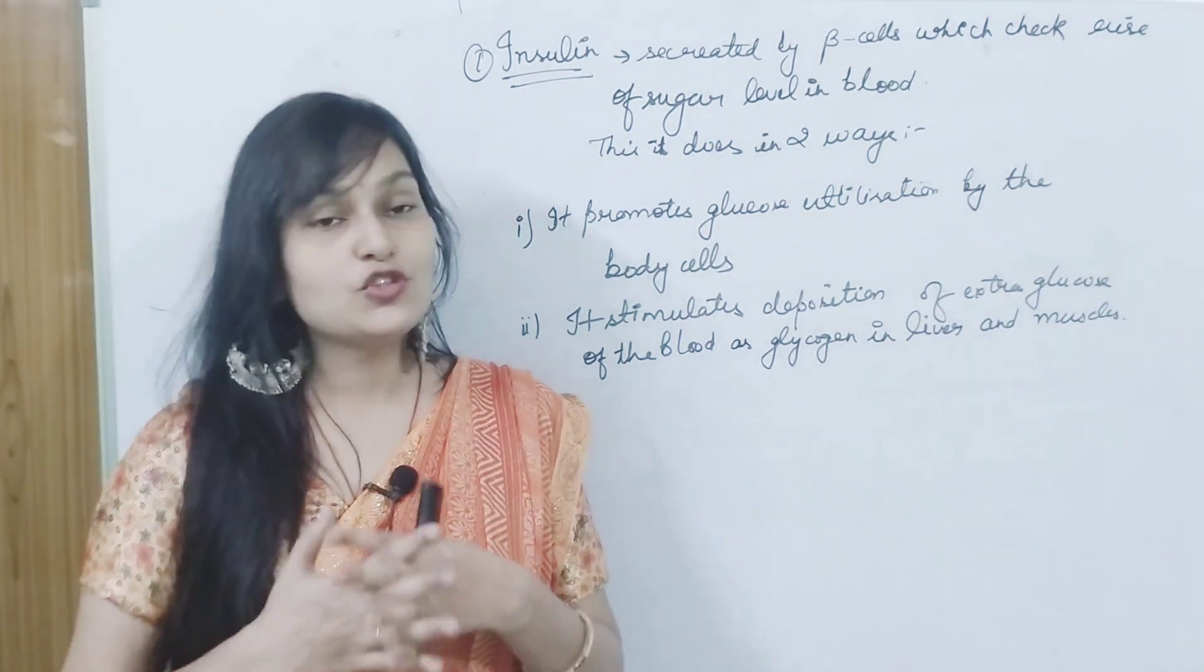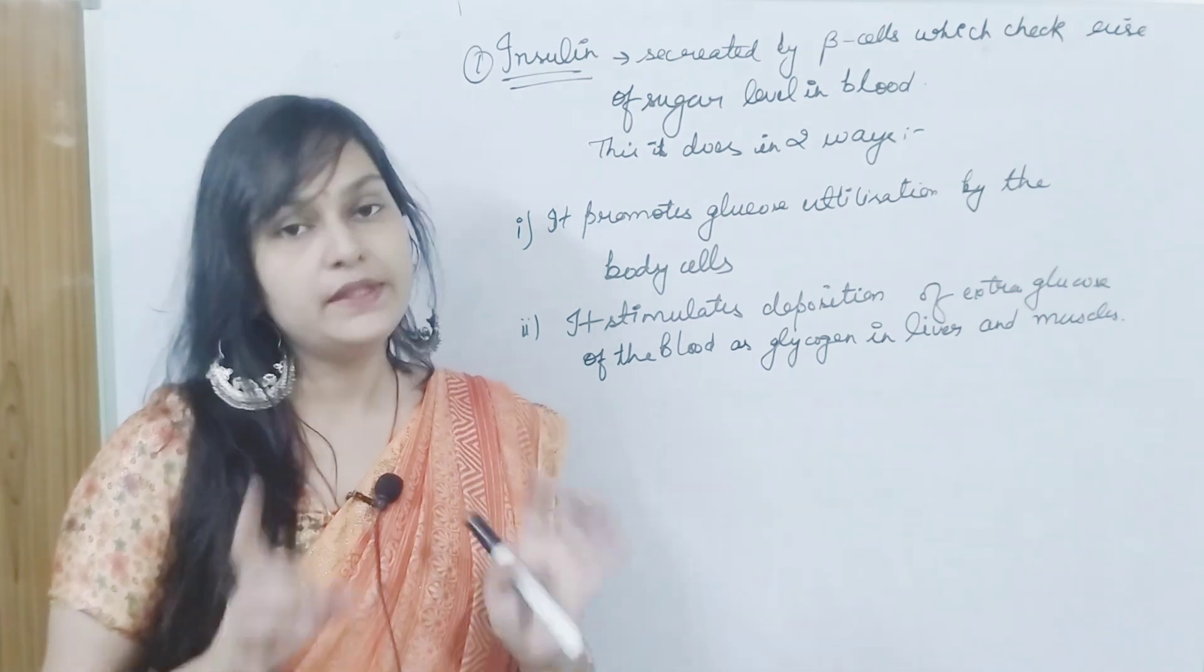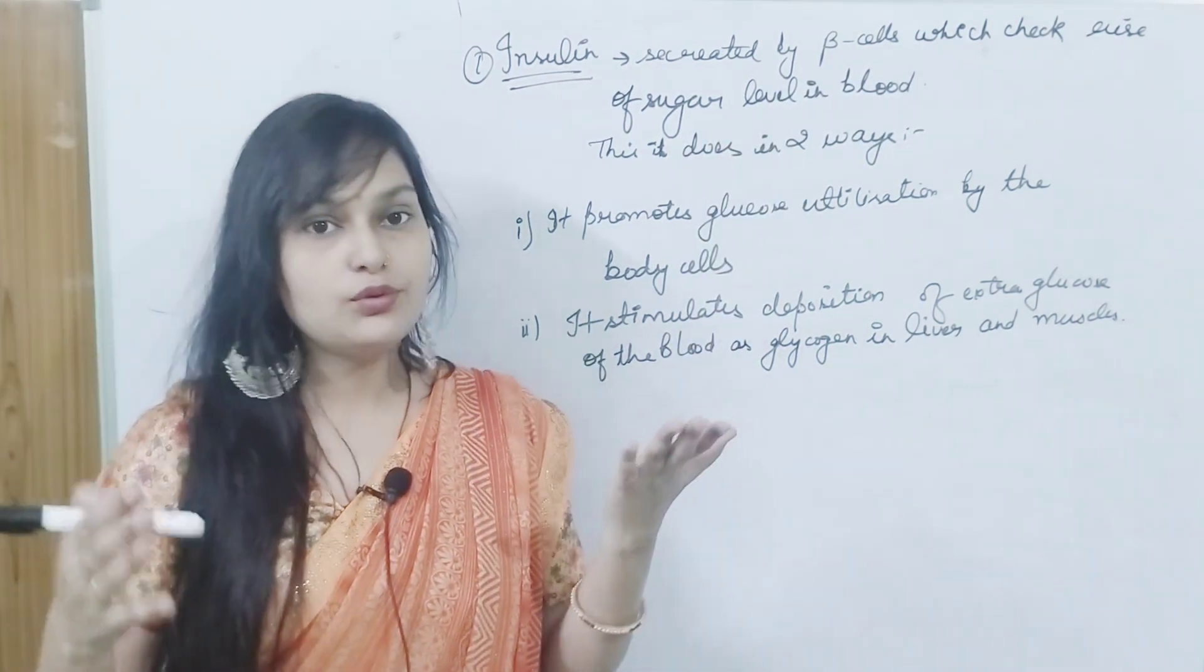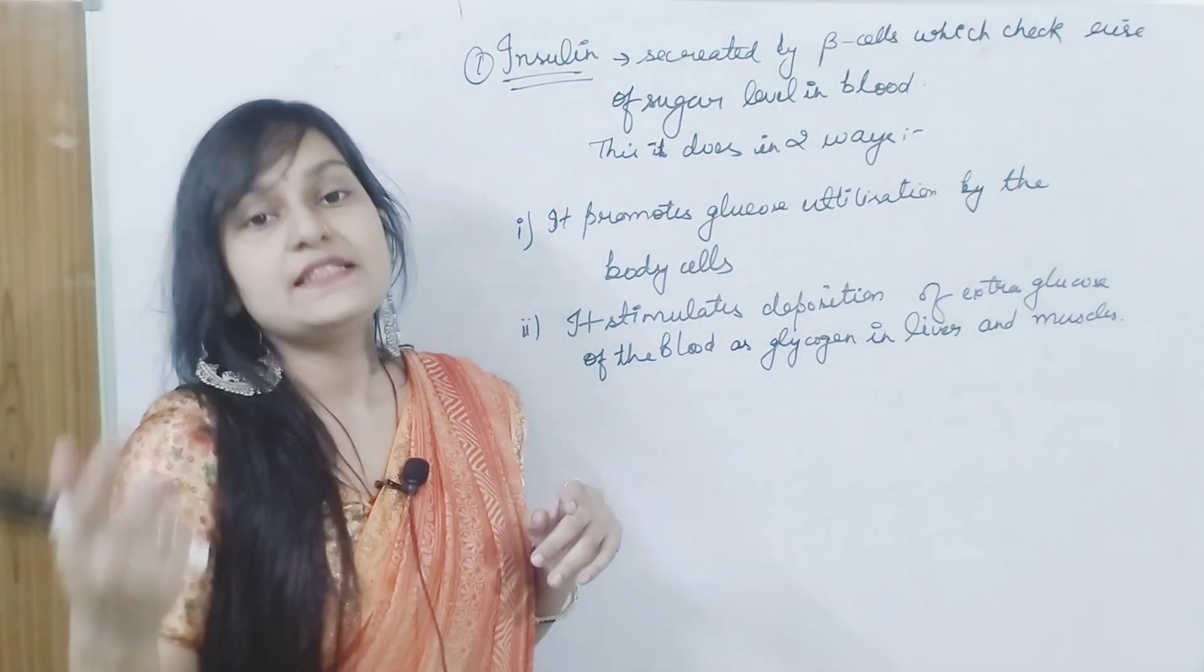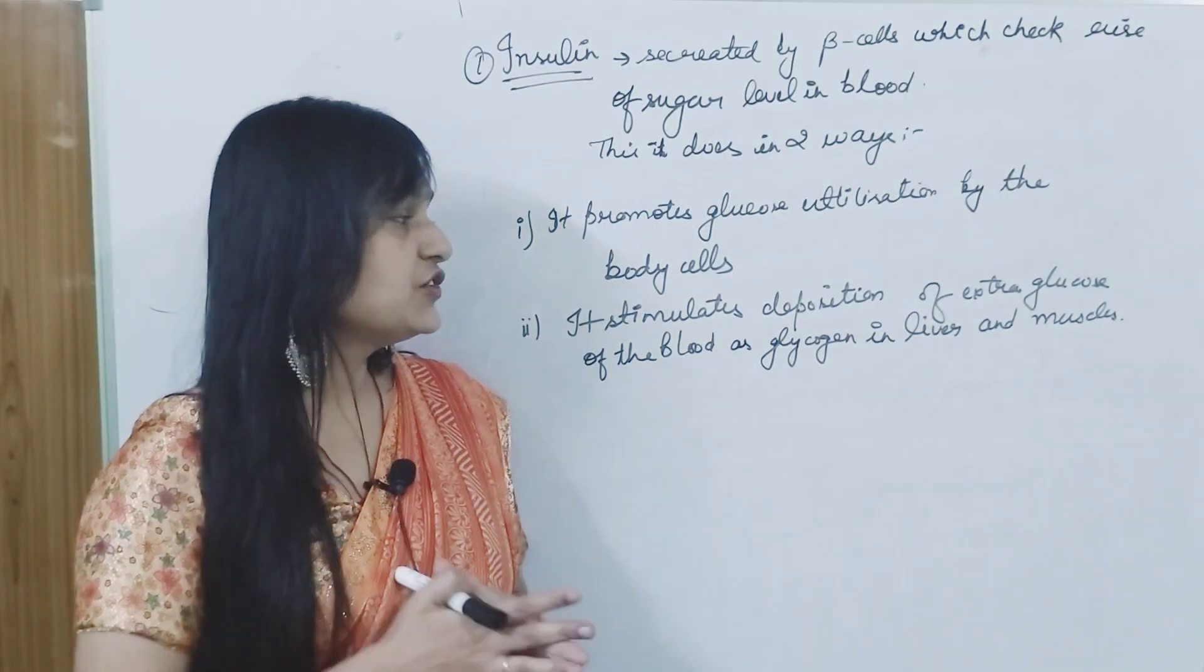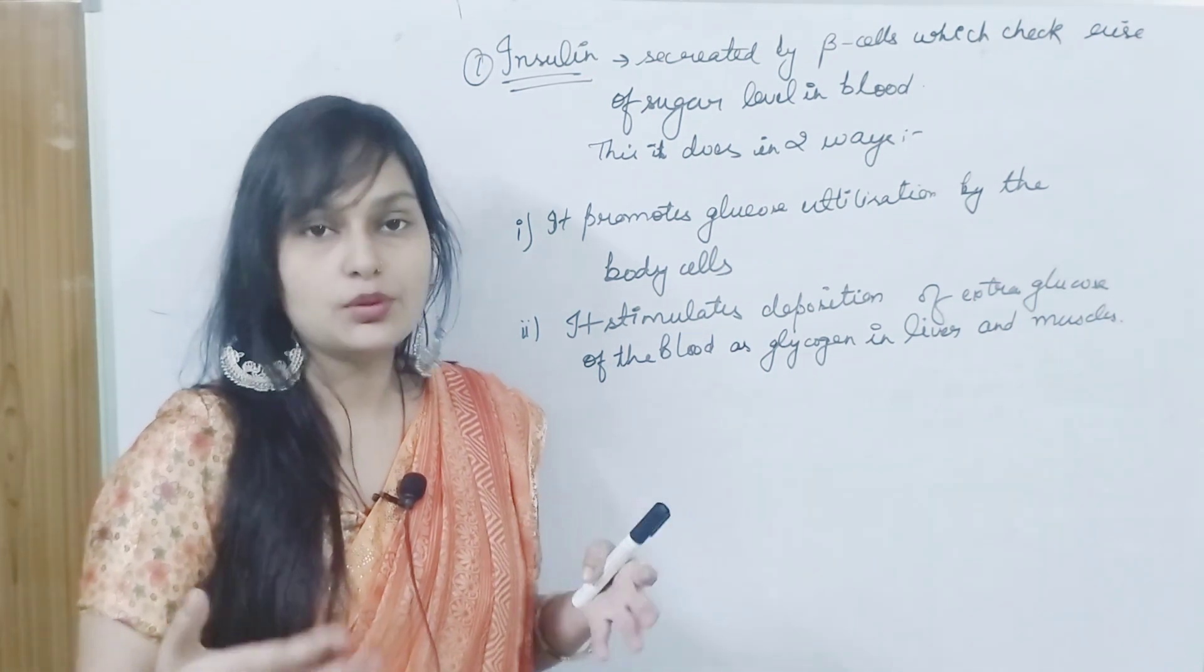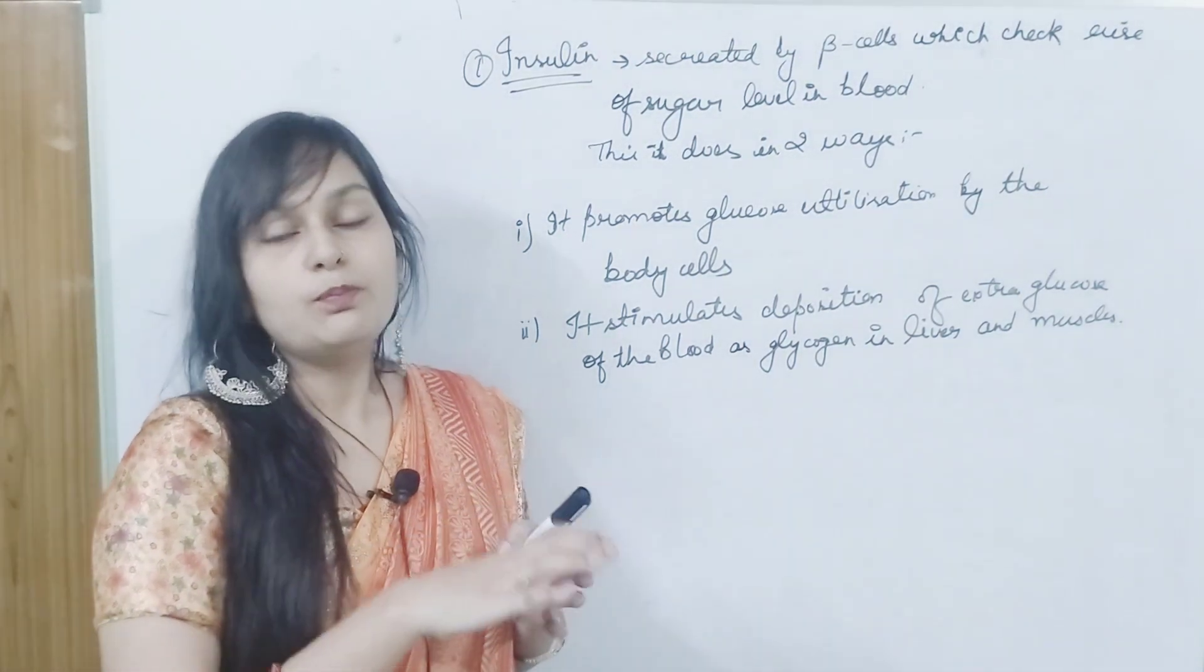Insulin is secreted by the beta cells, which check the rise of glucose levels in the blood. It is secreted by beta cells. What work does it do in the blood? Check the rise of sugar levels. In your blood, the sugar level has no rise. It checks it out. We have two ways to check it out. First, it promotes glucose utilization by body cells. The blood cells in your blood can utilize the glucose in your body.